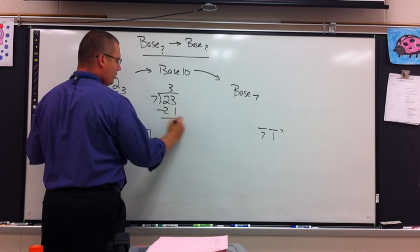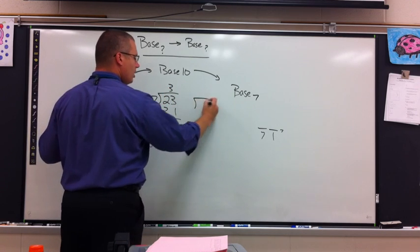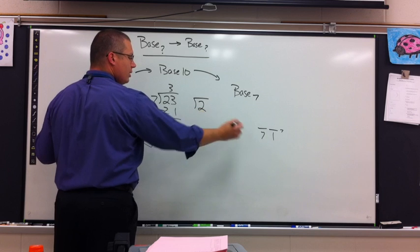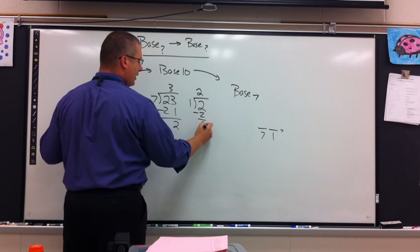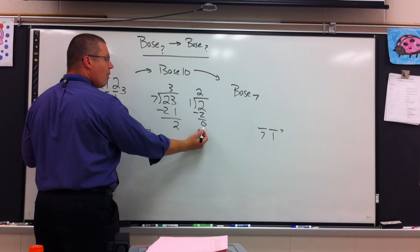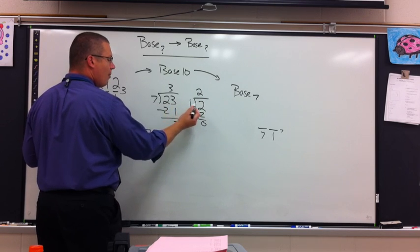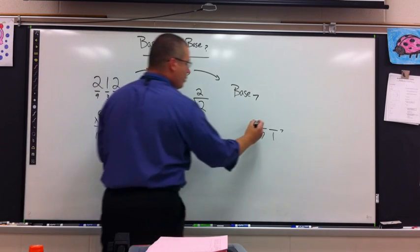Take my remainder over. Next place value is the 1. 1 goes in twice, subtract, get 0. I know I'm done because I have a 0 as a remainder. I've covered up all my place values. I'm done: 3 2 base 7.